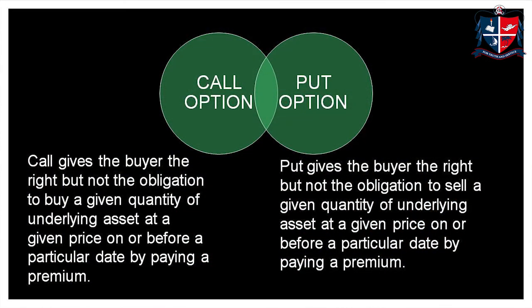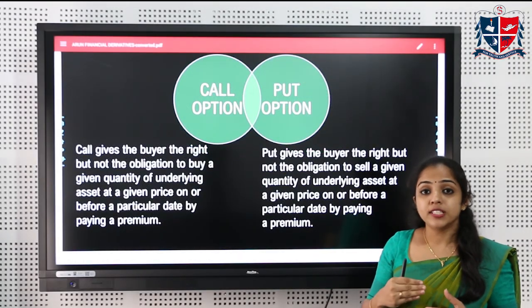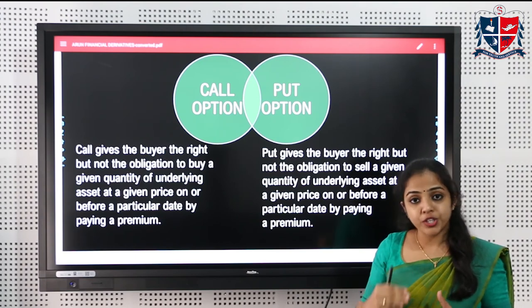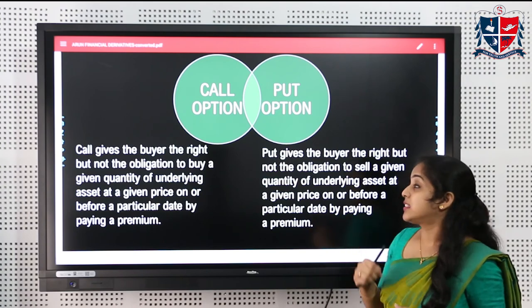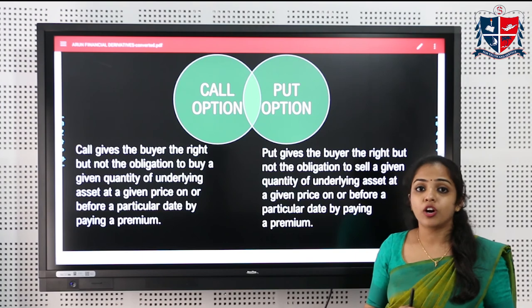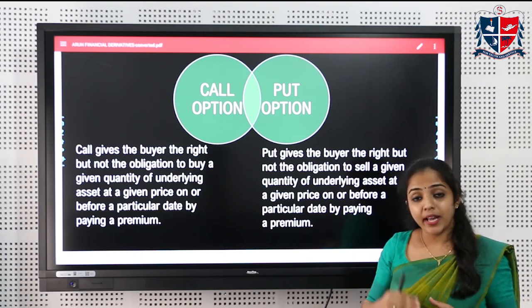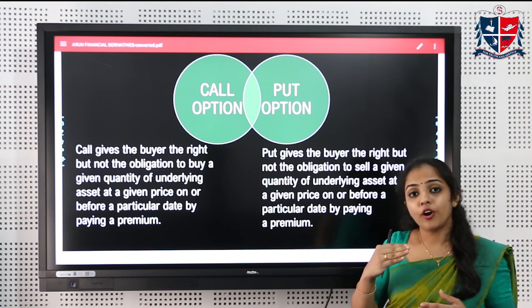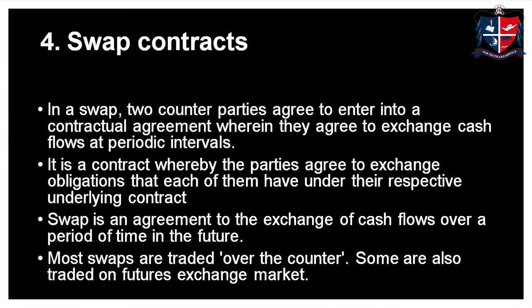There are two types of options. A call option gives the buyer the right — not an obligation — to buy an underlying asset on a specified date at a specified price. A put option gives the option holder the right to sell an underlying asset on a specified date at a specified price.